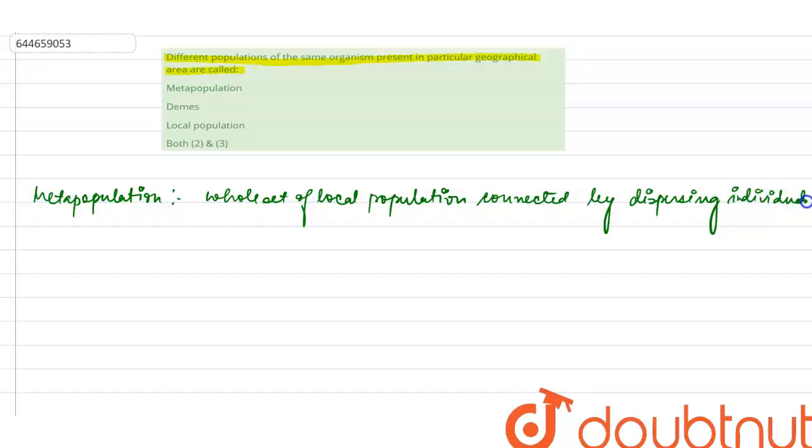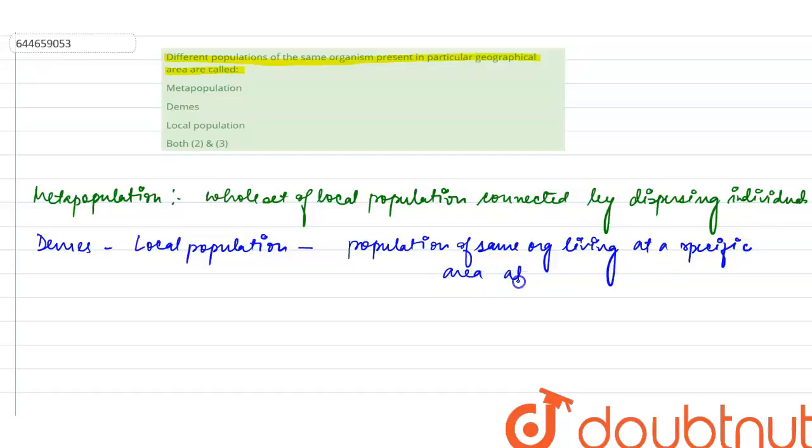This is our metapopulation. Now what do we mean by deems? Deems, or we can say local population, is also known as local population. What does it mean? It means a population of the same organism living in a specific area at a particular time.